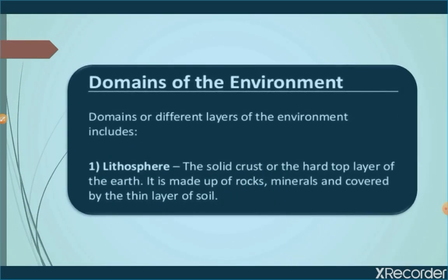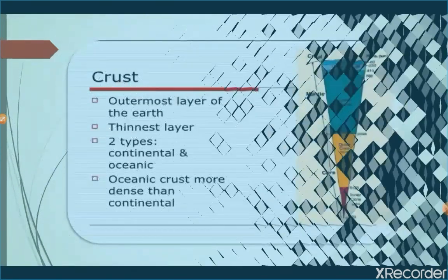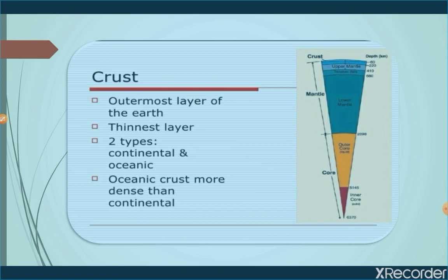Lithosphere: the word 'litho' is a Greek word meaning rock. It is the solid crust or the hard top layer of the earth, made up of rocks and minerals and covered by a thin layer of soil. The earth has three main layers: the crust, the mantle, and the core. The crust is the outermost and thinnest layer — about 35 kilometers thick under the continents and about 5 kilometers under the oceans. Oceanic crust is more dense than the continental crust.